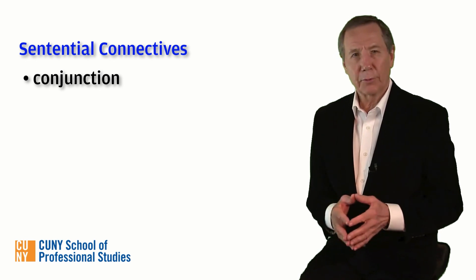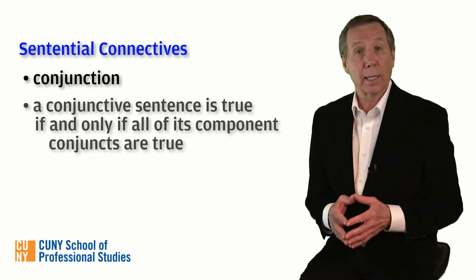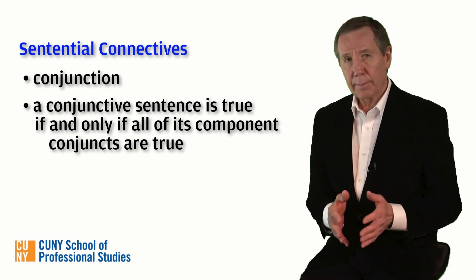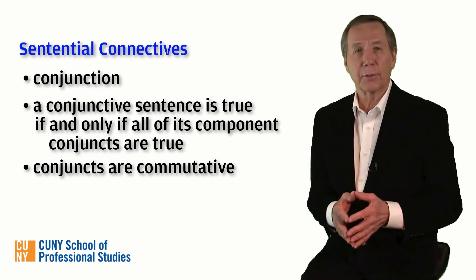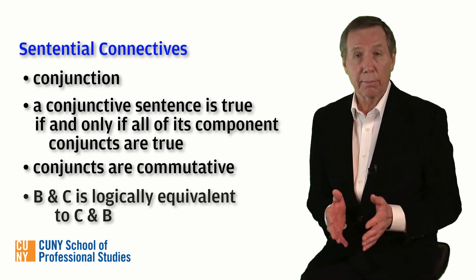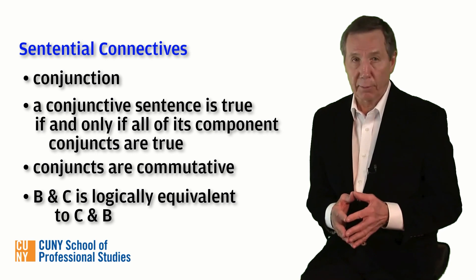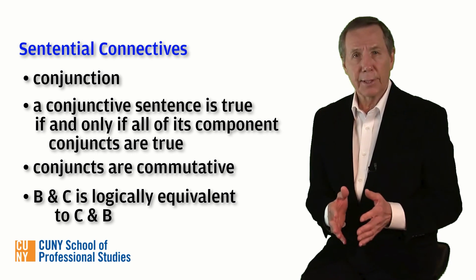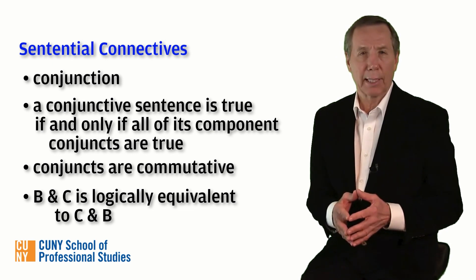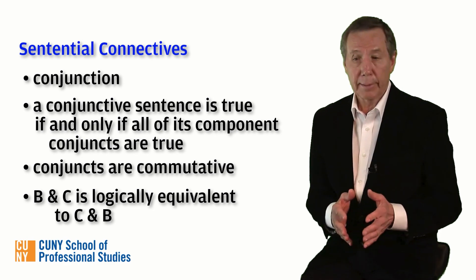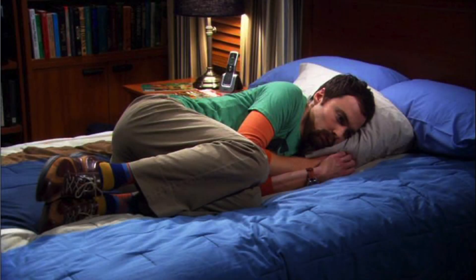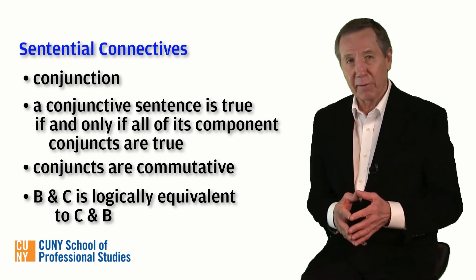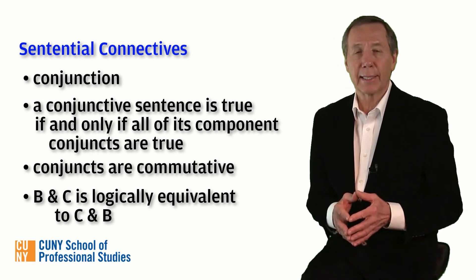As we've just seen, the truth table for conjunction gives us a rule for its use. Incidentally, conjuncts are commutative in the sense that the order of the conjuncts doesn't affect the truth value of the compound sentence — we can reverse the order of B and C and it won't make a difference, at least not in sentential logic. As an aside, the order of a conjunction expressed in natural language like English is sometimes very important. Saying 'he took off his shoes and got into bed' is very different from 'he got into bed and took off his shoes.' In this case, the order of events matters, so the use of 'and' is not commutative.